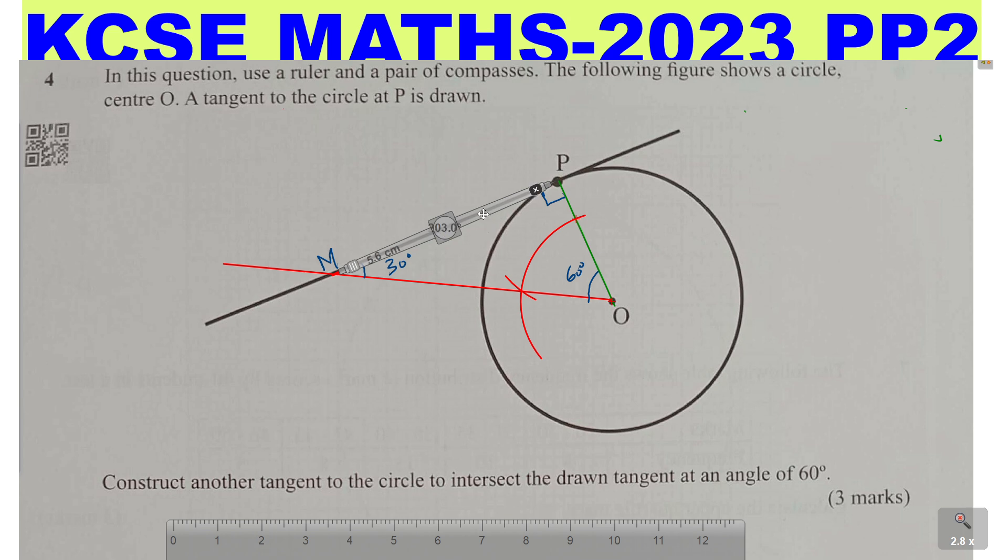Take that length. And then using that length, I will simply stand at M and mark an arc. Because we said tangents to a circle from a common external point are equal.